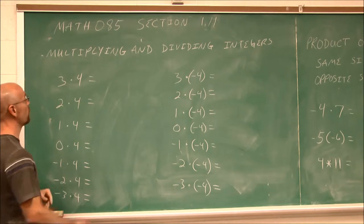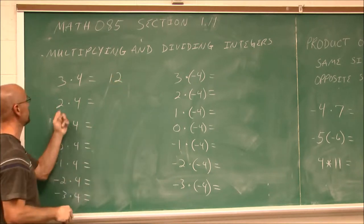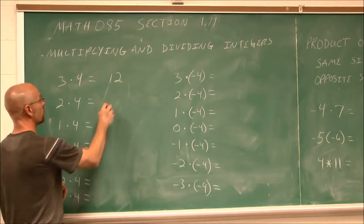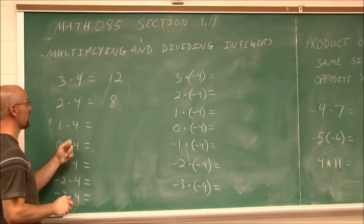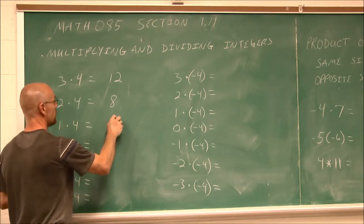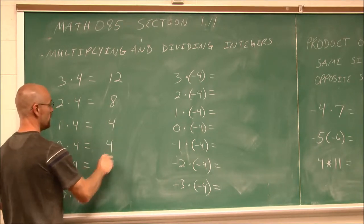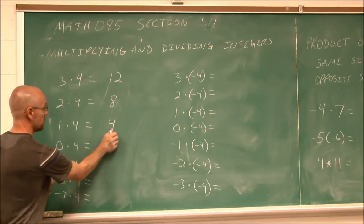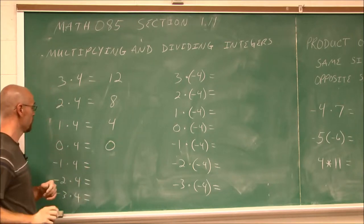3 times 4 — we know that's 12. And 2 times 4 is 8. And 1 times 4 is 4. And 0 times 4 is 0.